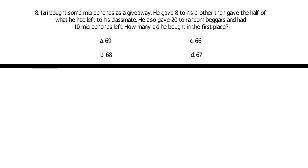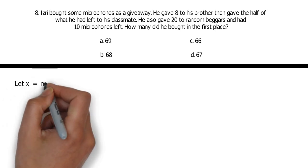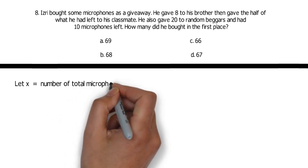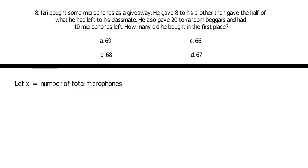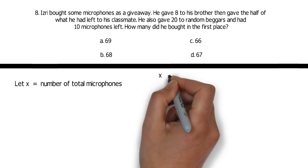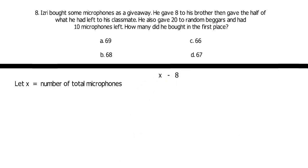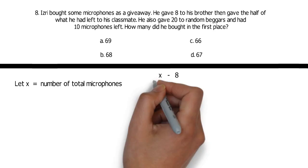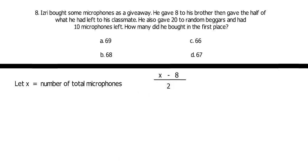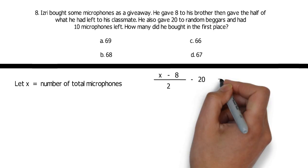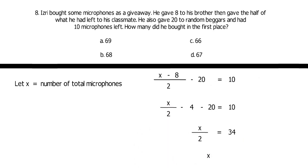For the last number 8, your ability to transform word problems to equation is crucial for faster and more sure answer. So, let X be the microphones of Izri in the first place. And now, let's try to equate it. First, he gave 8 to his brother, meaning minus 8. Then, he gave half of what's left, so divided by 2. After that, because he is generously spendthrift, he also gave 20 to a random beggar. Lastly, to complete the equation, there were 10 microphones left. Just do the math and you would get 68 microphones.